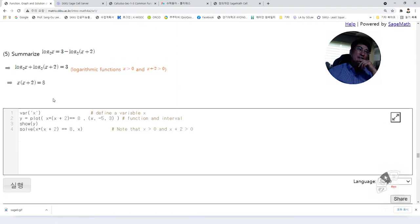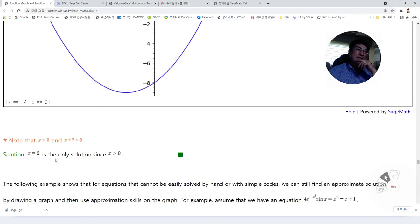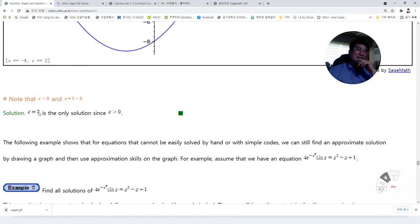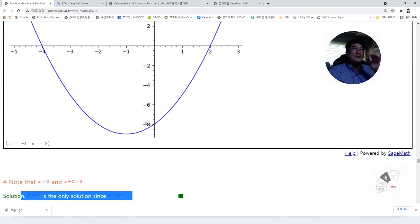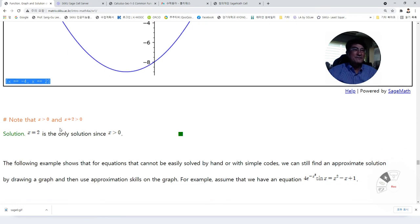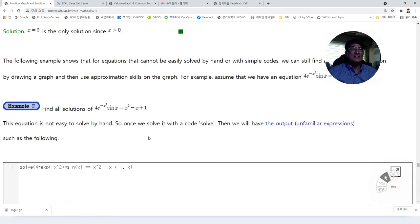But this is a log function. So we know x is bigger than 0 and x plus 2 is bigger than 0. So we know x equals minus 2 does not satisfy this. So this one is the only solution that we have. So we simplify it and we draw the graph. Then we can have the solution easily without any confusion.